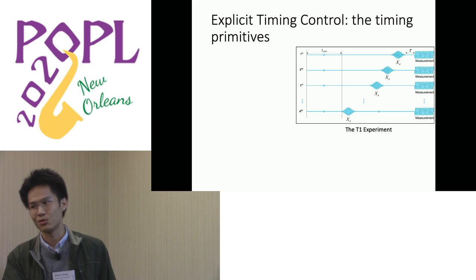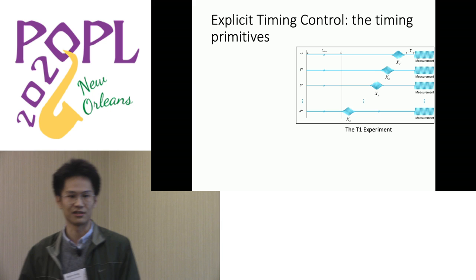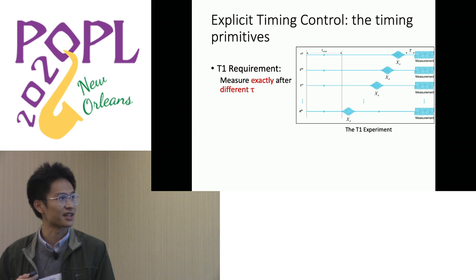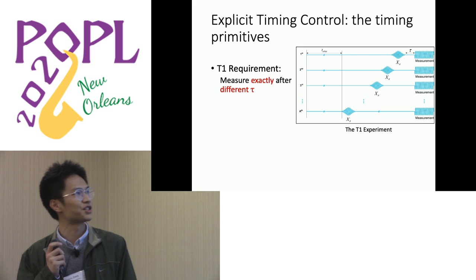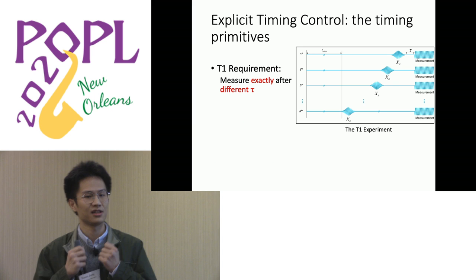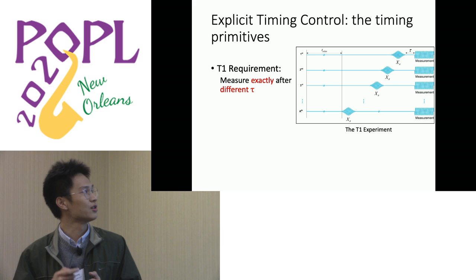Let's look at explicit timing control first. Here is an example of the T1 experiment, which is a very useful experiment in bootstrapping a quantum device. Its goal is to measure the qubit relaxation time. In doing the T1 experiment, we need to change the time interval between the X gate and the measurement, so we must be able to explicitly control the timing between operations.